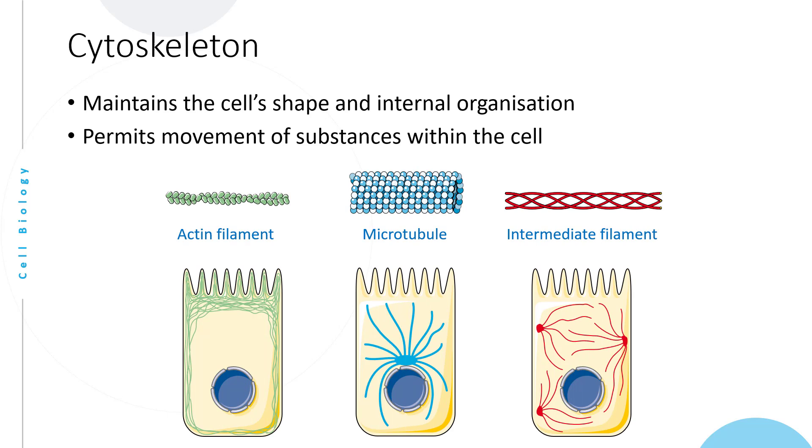Microfilaments, of which actin filament is an example, are rod-like structures involved in contraction of muscle fibers. In non-muscle cells, microfilaments help provide support and shape to the cell.